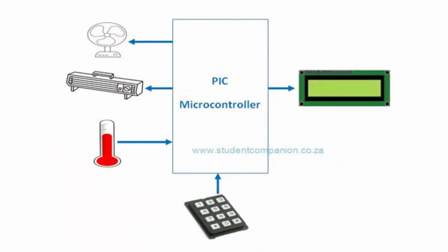In this project, we're going to design an automatic temperature control system. An automatic temperature control system has the ability to monitor and control temperature of a specified space without human intervention. This project uses a PIC microcontroller to automatically control the temperature of a specified area. This area could be a small plant, a house, or any place or device that requires a controlled temperature, like a chicken incubator, for example.